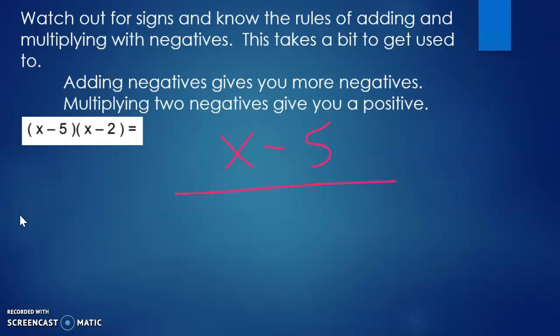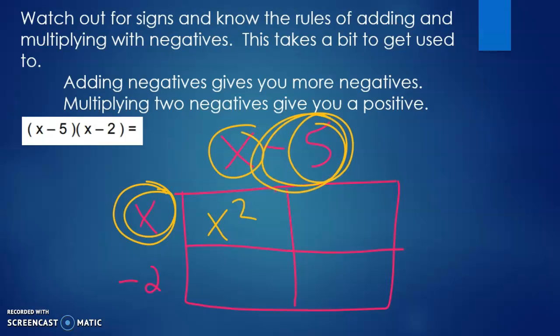x minus 5, and then you do your boxes. This is where some people, if you're not conscious and write x and a negative 2, it causes some problems. So, the first one is x times x, which is x squared. Then we do x times negative 5. I even tried to mess that sign up as negative 5x. And then we come down, and we do negative 2 times x, which is a negative 2x. And a negative 2 times a negative 5, which is a positive 10.